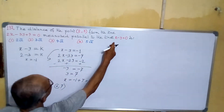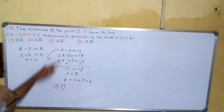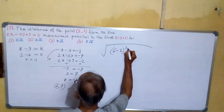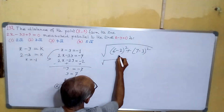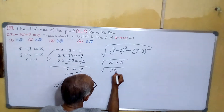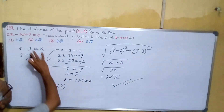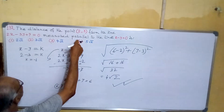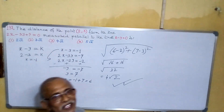Now (6, 7) is the point on the given line that lies on the parallel line through (2, 3). So we find the distance between (6, 7) and (2, 3): root of (6−2)² + (7−3)² = root of 16 + 16 = root 32, which is 4 root 2. Hence this is our answer. First find the parallel line through the point, then find its intersection with the given line, then find the distance between those two points.